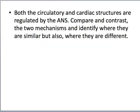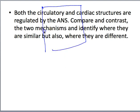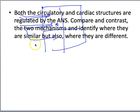Both the circulatory and cardiac structures are regulated by the ANS, and I want you to compare and contrast these — I actually make this a standalone question on a take-home exam in the summer. The SA node and AV node have dual innervation by both the cardiac accelerator nerve and the vagus nerve, but down in the ventricles it's the cardiac accelerator nerve by itself. That's going to change the total amount of blood that exits into both the pulmonary and systemic circulatory systems.